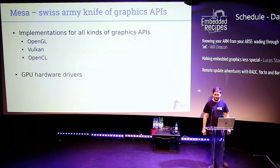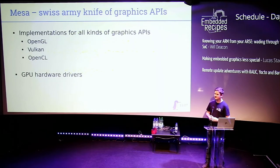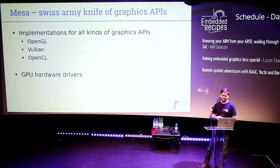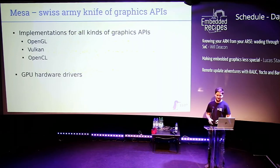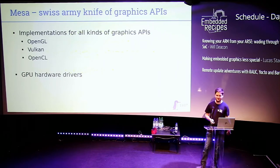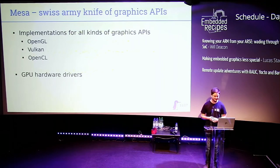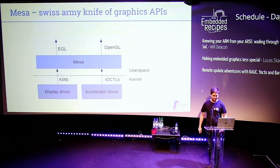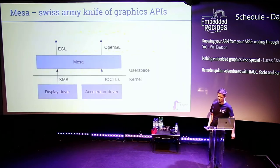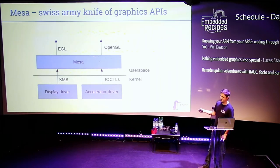For the user space part of the open source drivers, most of it is in a single library project: the Mesa 3D project. It's basically the Swiss Army knife of open source graphics drivers — it implements all kinds of APIs for applications to use like OpenGL, EGL, Vulkan, even OpenCL now for some graphics hardware. And it also contains the user space part of the graphics drivers, with hardware-specific parts in Mesa sitting on top of the DRM kernel interfaces.